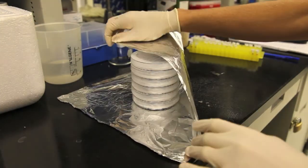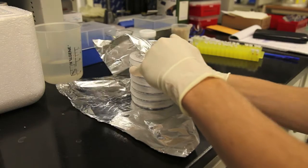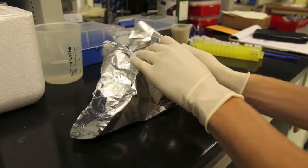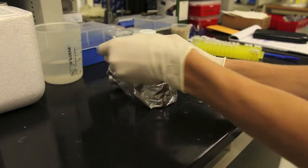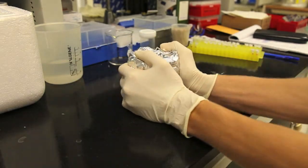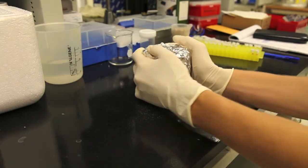Once you're done preparing your plates, stack them and wrap them in aluminum foil. This will keep them in the dark during the cold treatment you're going to subject them to. The cold treatment is known as stratification and it's an important step in breaking seed dormancy and synchronizing seed germination.